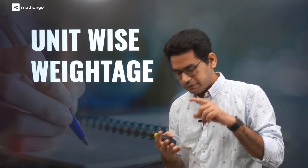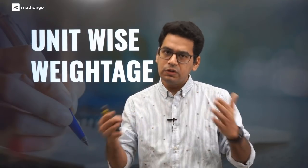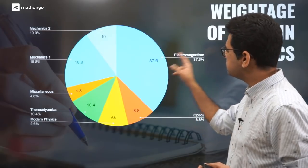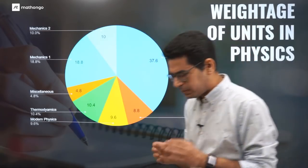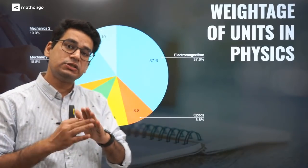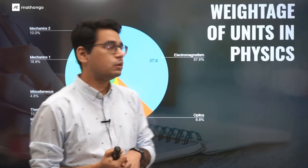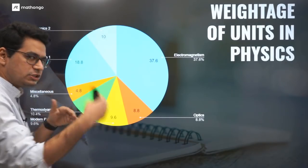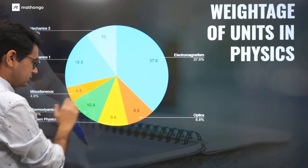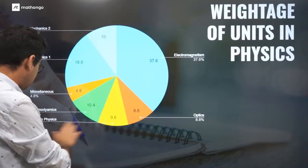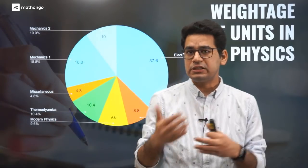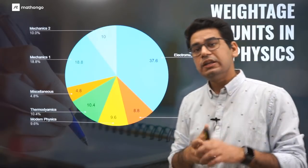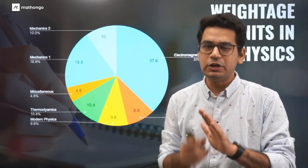Now let's talk about unit-wise weightage in physics, like electromagnetism and all that. This is the graph for weightage of units in physics. The major chunk is electromagnetism by far margin, 37.5% of the paper, which any given day is useful for any exam. The next big chunk is mechanics 1, earlier chapters of mechanics, 10%. Mechanics 2, 10%. Thermodynamics 10%. Optics is only 8%, not that much. Modern physics 9.6%. But if you compare with JEE Main statistics, it's more or less the same.